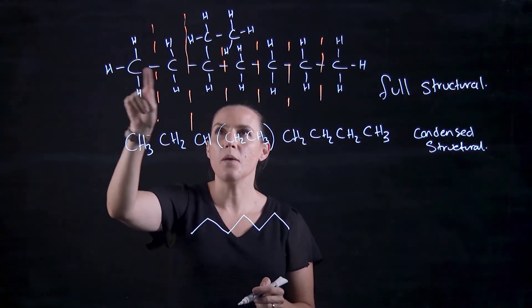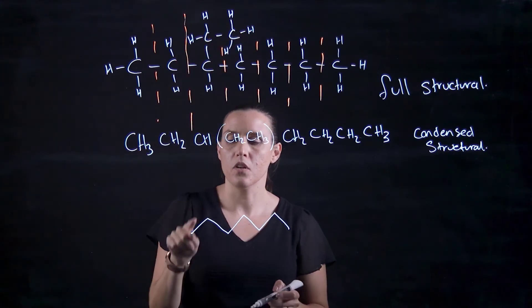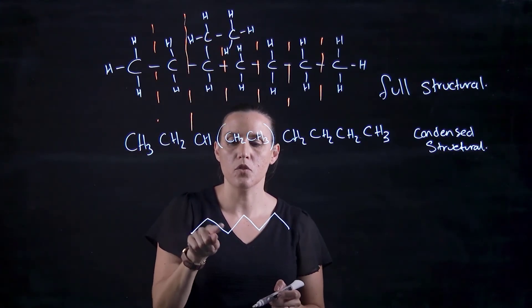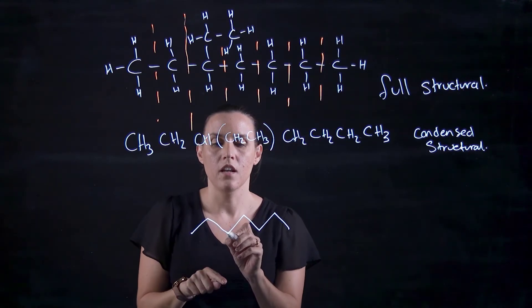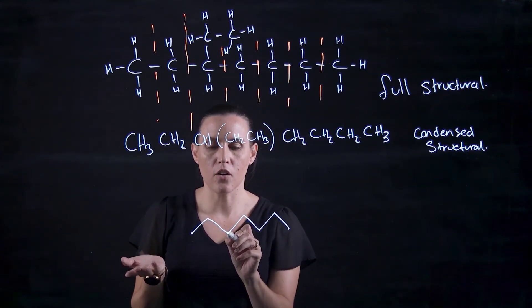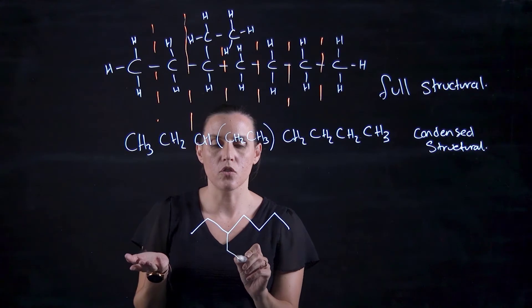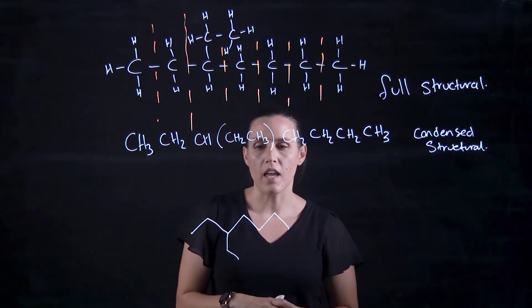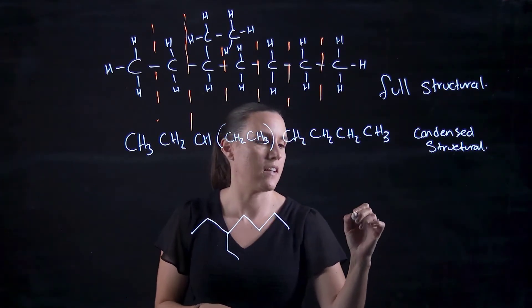Now on carbon three, I've got this ethyl group. So carbon one, carbon two, carbon three down here. Now to draw that on, I go one, two. So that'll be my ethyl. So that's what the line diagram looks like.